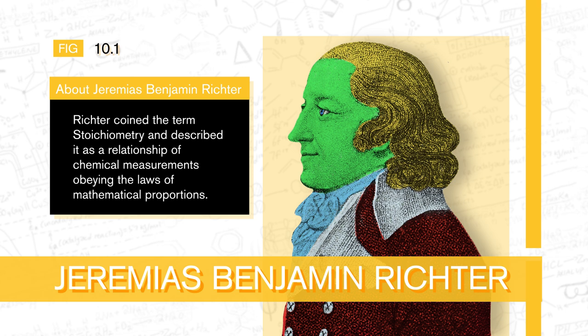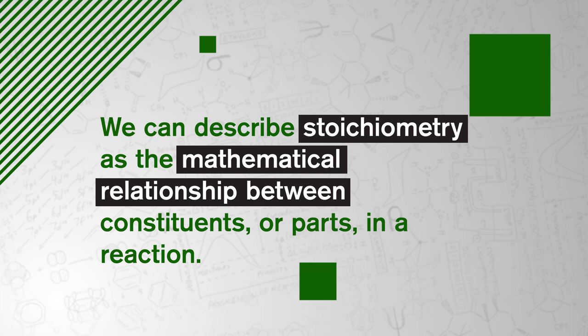Stoichiometry originated in the 18th century when German chemist Jeremiah S. Benjamin Richter coined the term and described it as a relationship of chemical measurements obeying the laws of mathematical proportions. These days, we can describe stoichiometry as a mathematical relationship between constituents or parts in a reaction.